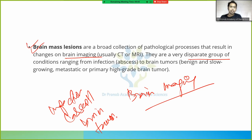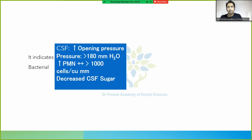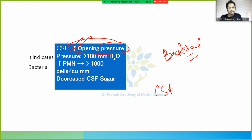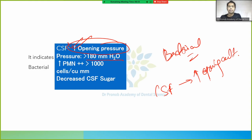In bacterial meningitis, CSF analysis shows increased opening pressure — more than 180 mm of water. There is an increase in polymorphonuclear cells (neutrophils), which may be more than 1000 cells per cubic millimeter. CSF sugar is decreased — very low.